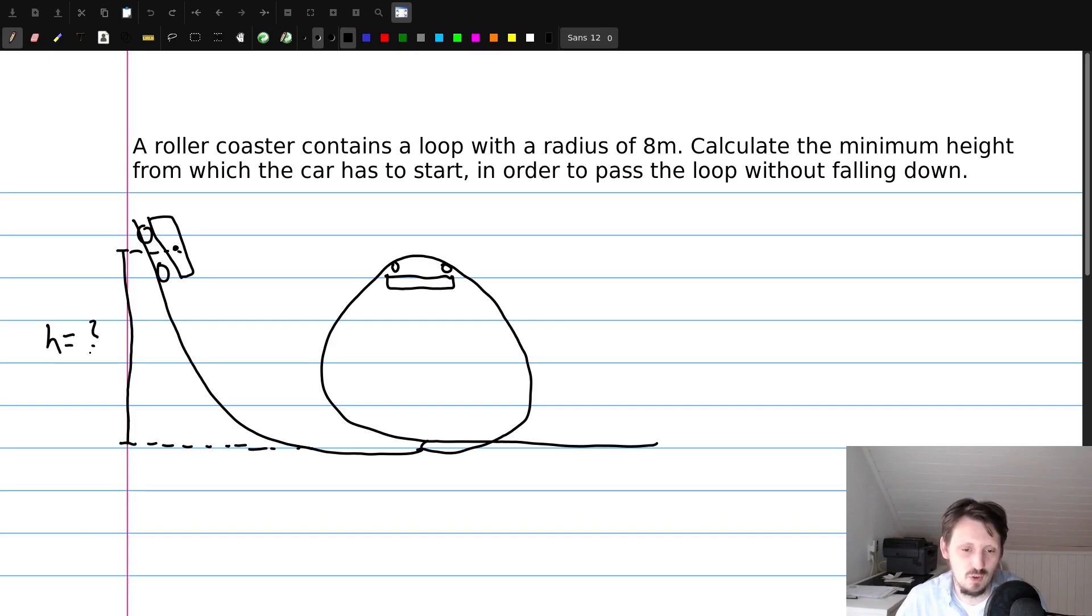So what we know here is, what is searched for is the height H. It's also always I think recommended to insert the unknown parameters into the sketch so we know later what we want to calculate actually and we are not losing the overview. What is known is actually the radius of the loop which is given as eight meters.